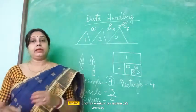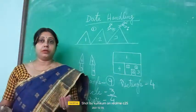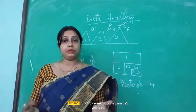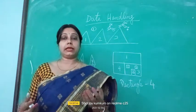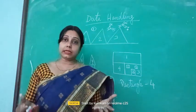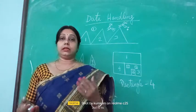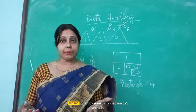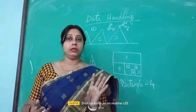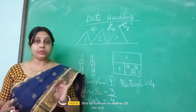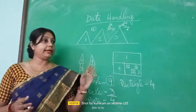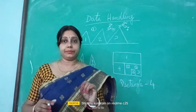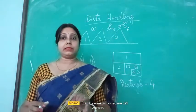Data handling can be done through anything — maybe names of some fruits, pictures of fruits, vegetables, flowers, or colors can be given to you. From there the information will be asked. Whatever question is asked, give a to-the-point answer. No need to write in full sentences. The data handling questions will be in long form, but the answer will be in objective form.